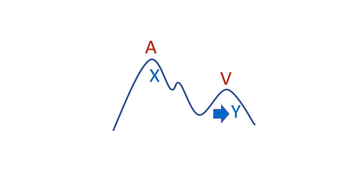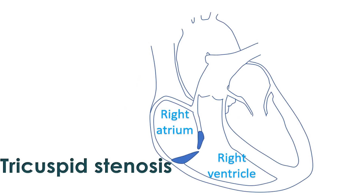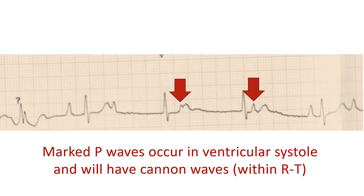On visual inspection, only A and V waves are visible, while the C wave can be documented only in a pulse recording. The A wave is due to atrial contraction. It is prominent in tricuspid stenosis, pulmonary stenosis, and pulmonary hypertension. Prominent A wave does not occur in an unrestricted ventricular septal defect. Intermittent large A waves, called cannon waves, may be seen in complete heart block when atrial contraction occurs with a closed tricuspid valve. The A wave is absent in atrial fibrillation as there is no organized atrial contraction.